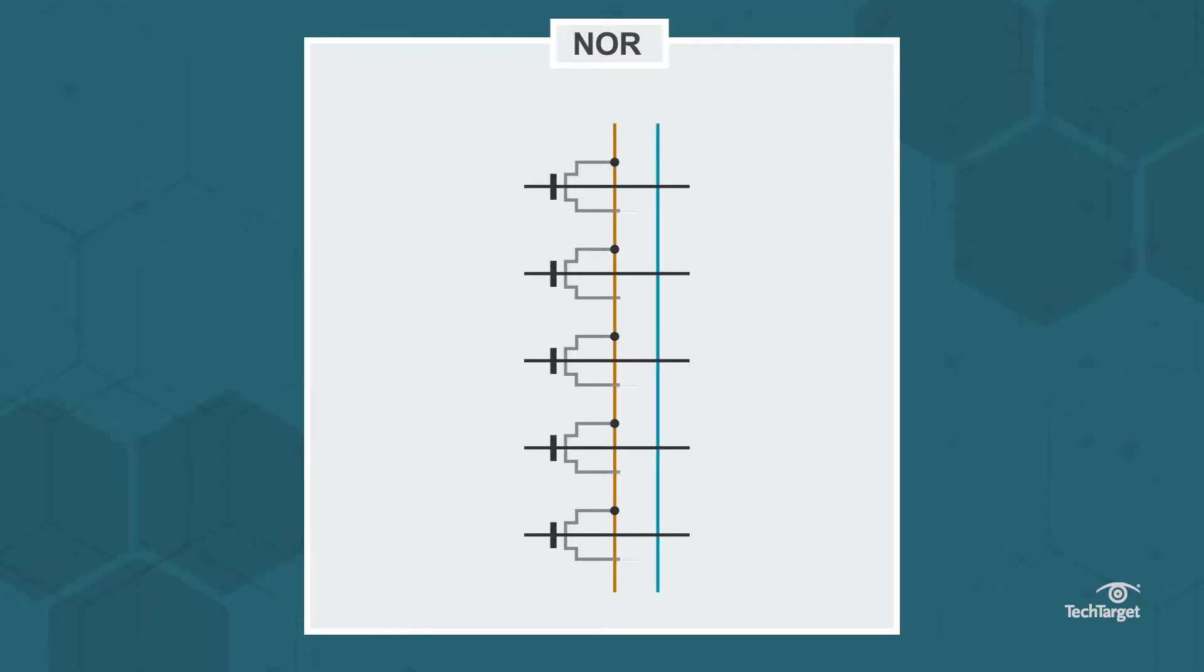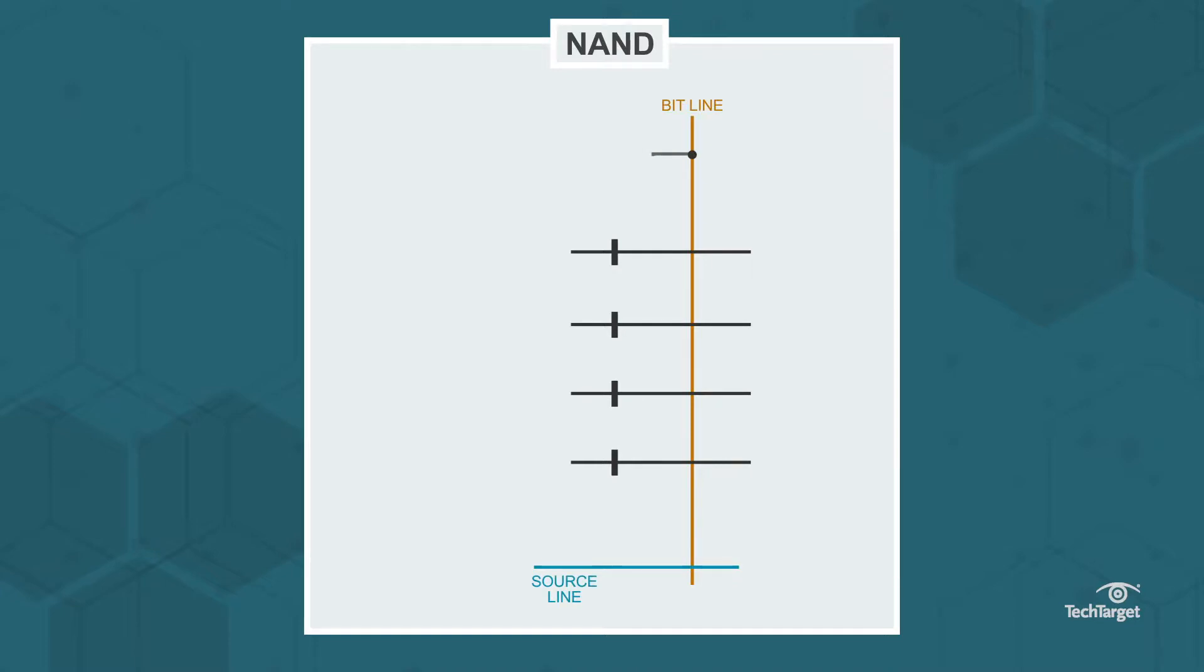With NOR flash memory, one end of each memory cell connects to the source line and the other end to a bit line, resembling a NOR gate. With NAND flash memory, several memory cells connect in a parallel series like a NAND gate.